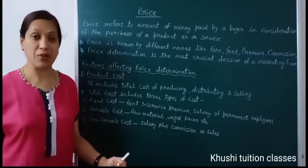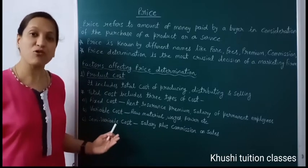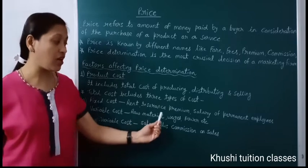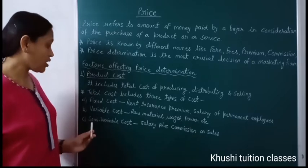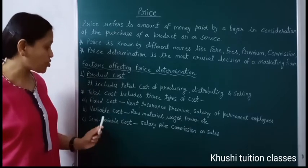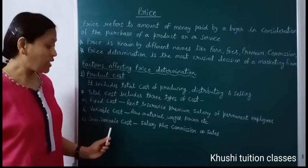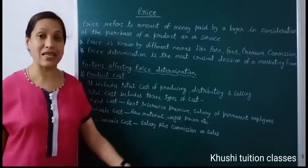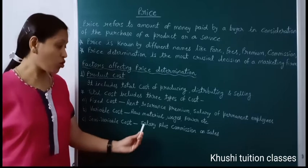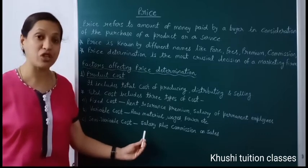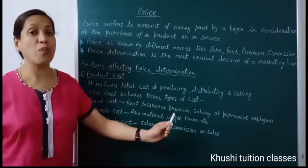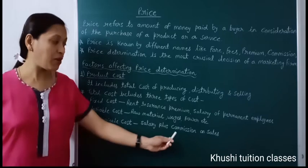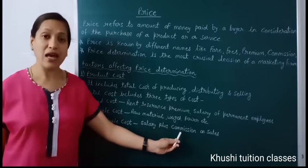The second is variable cost — it varies with the change in production. अगर आप production ज़्यादा करेंगे तो ये expenses ज़्यादा लगेंगे, यदि production कम करेंगे तो variable cost भी कम लगेगी। For example, raw material, wages, power and fuel. The third is semi-variable cost — it is the combination of fixed cost and variable cost. It varies with production but not in direct proportion. For example, salary plus commission on sales — salesman की salary fix होती है, लेकिन जितनी sales करेगा उसके ऊपर percentage commission के form में मिलेगा।